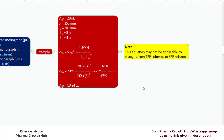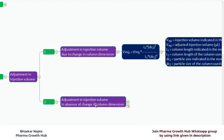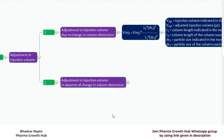An important note: this equation may not be applicable to changes from total porous particle columns to superficially porous particle columns. The second case is the adjustment in injection volume in absence of change in column dimensions. If you are not changing the column dimension — not changing the length or particle size of the column — how much adjustment is allowed in the injection volume?